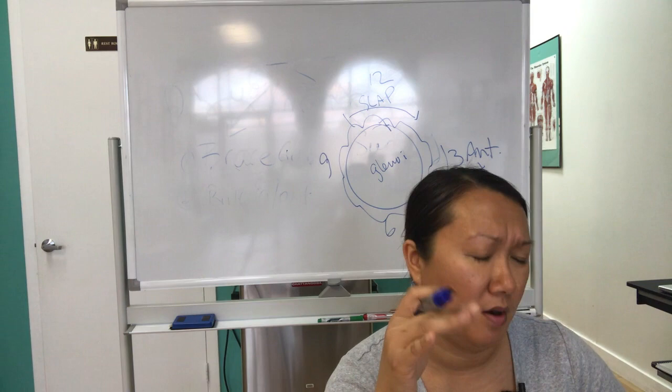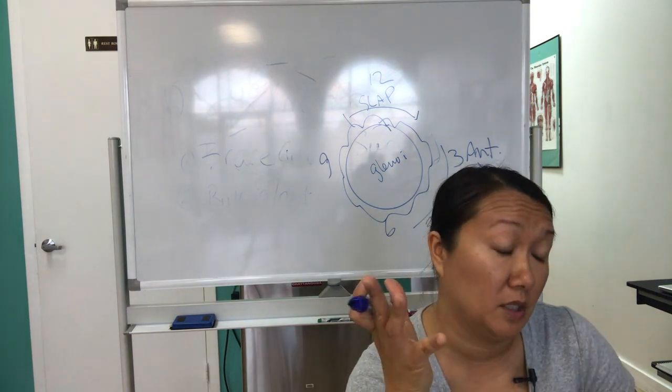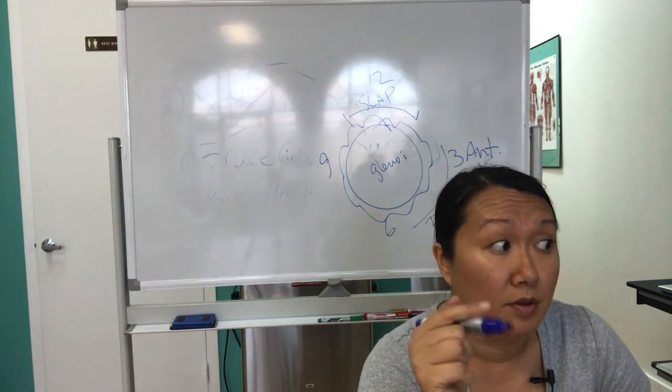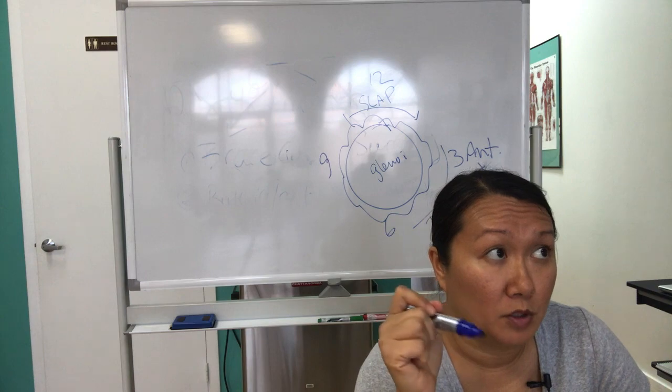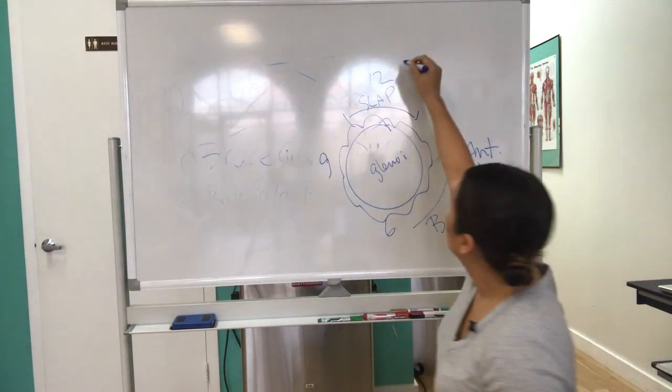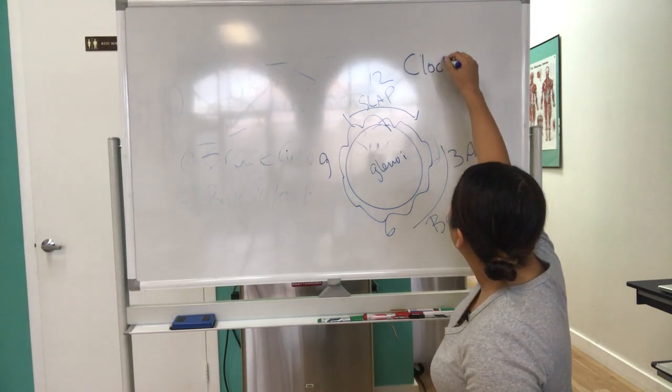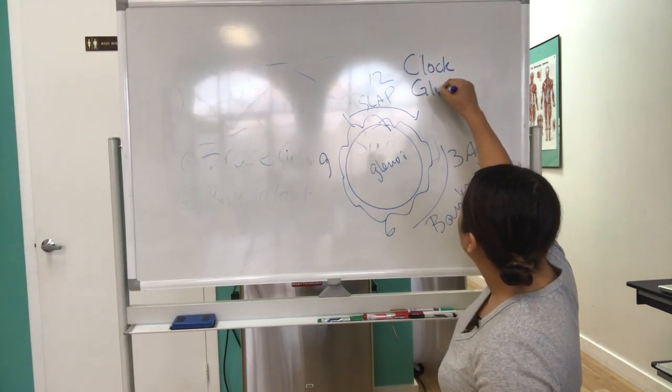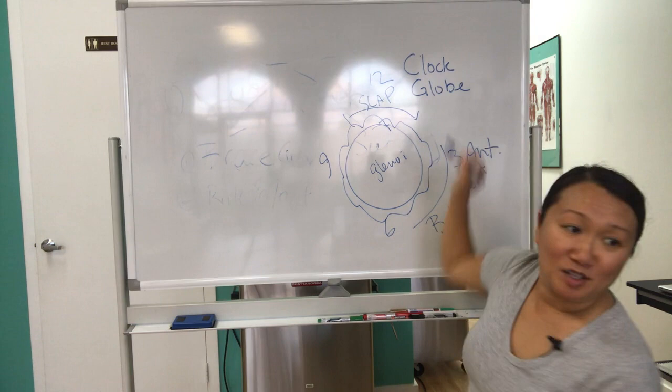I don't know if there's another part in the chapters that they might talk about the clock method, but in the very first parts of the chapter, they talk about the globe. The same thing. Clock, globe.